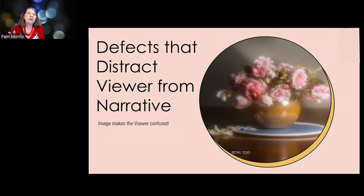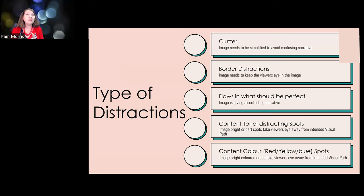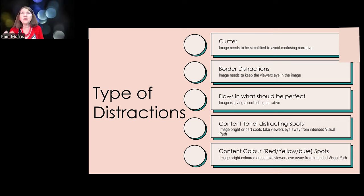Now we'll look at defects that can distract the viewer. Clutter is one - I've mentioned this many times: some of the most engaging images are simple ones. The story is simple, the narrative is simple, and it allows the viewer to relax in the image. When there's clutter, the viewer is never quite sure whether those things on the side are part of the image or should be ignored. It's like being in a cluttered room - it's not restful. Anything not in the story, get it out.